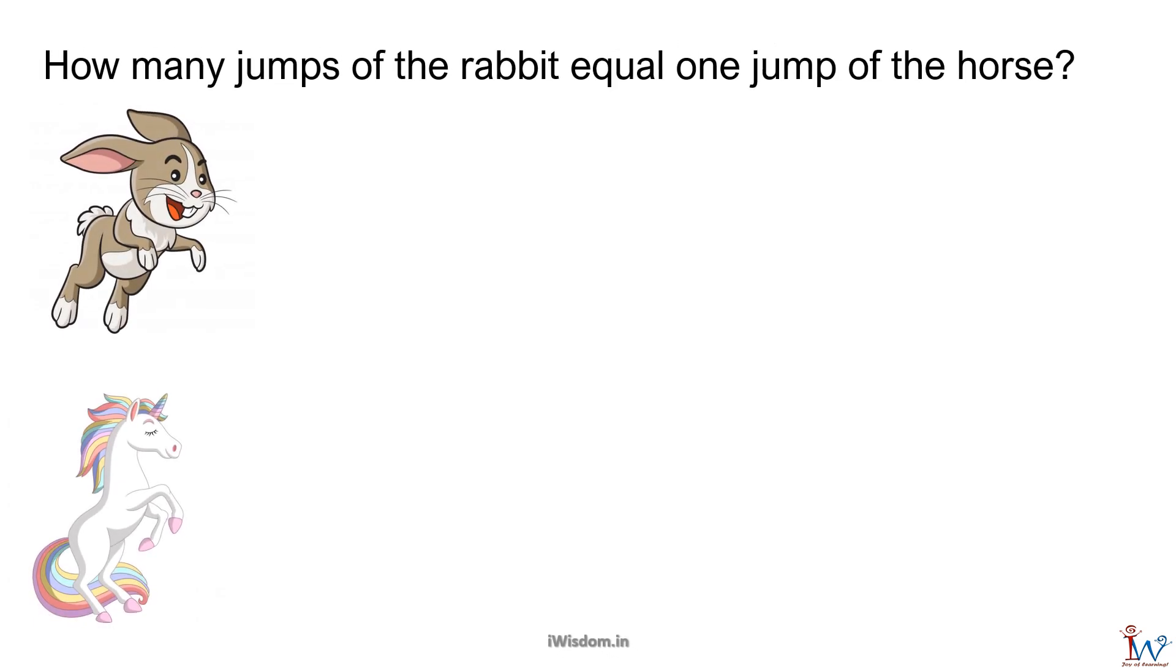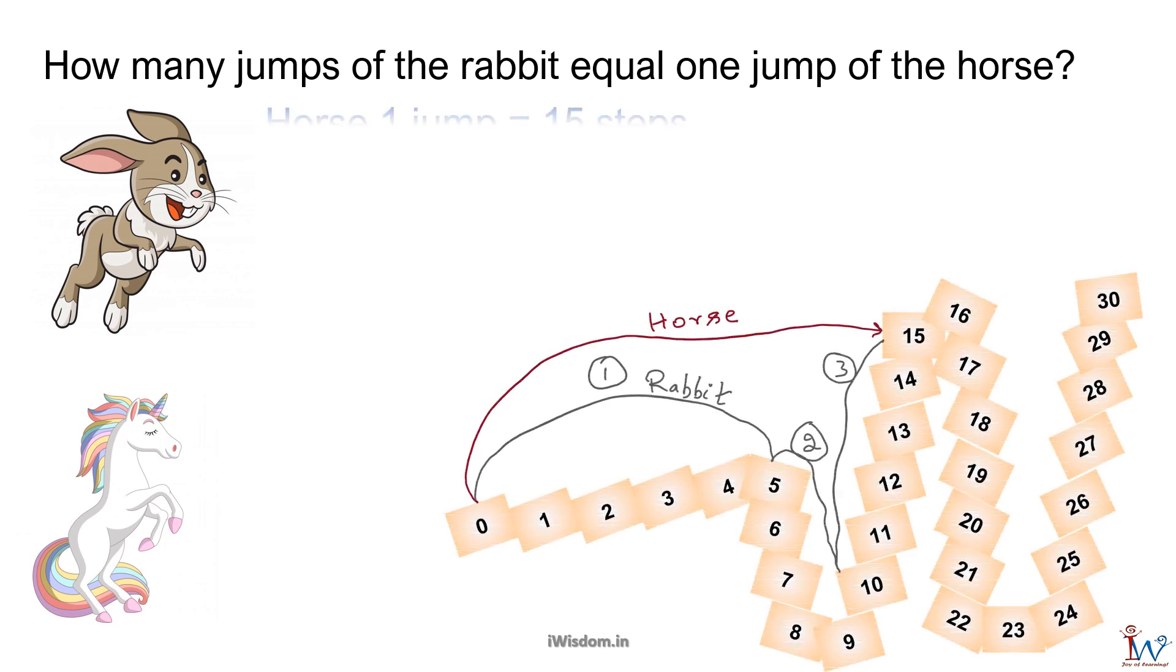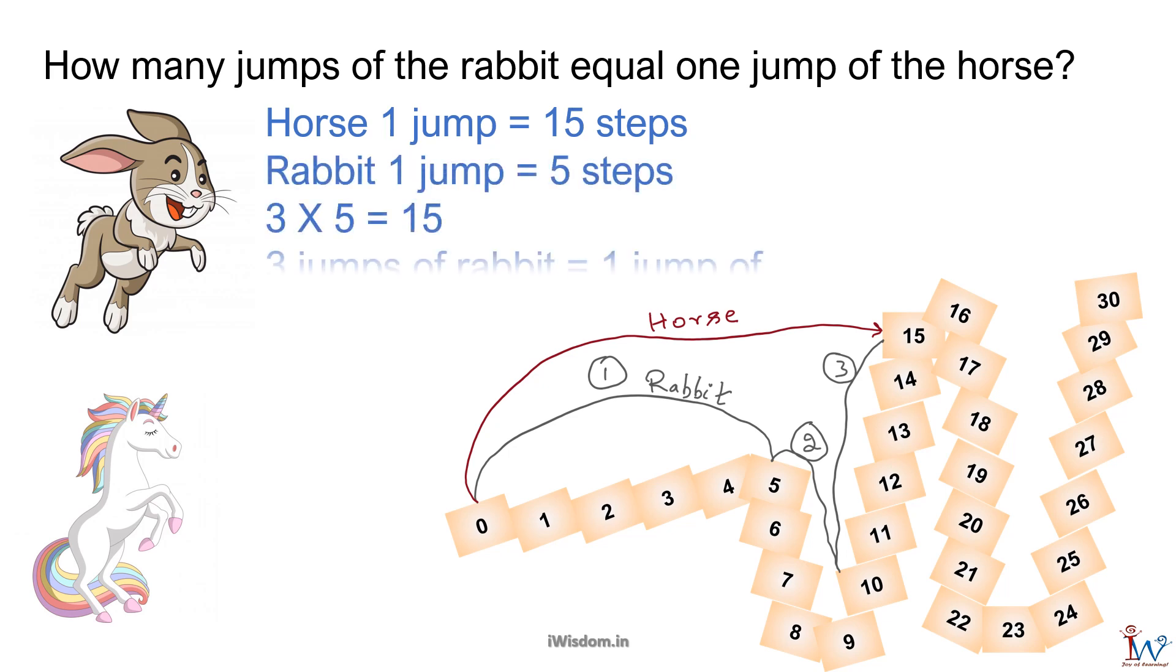How many jumps of the rabbit equal 1 jump of the horse? Horse's 1 jump is equal to 15 steps. Rabbit's 1 jump is equal to 5 steps. 3 times 5 is equal to 15. So 3 jumps of rabbit is equal to 1 jump of horse. Well done!